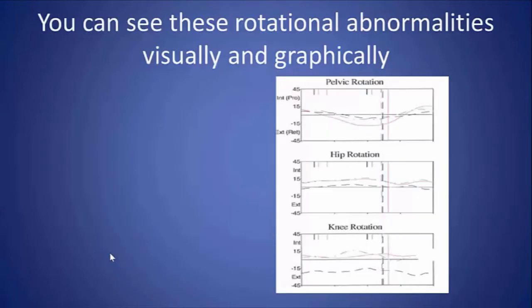This is more apparent on the graphs, which show the excessive pelvic rotation, the hip rotation indicative of internal femoral rotation throughout the gait cycle, and the knee rotation graph showing the relationship of the distal tibia to the proximal tibia and how it is internally rotated. She has a combination of internal tibial torsion as well as increased femoral anteversion, which can also be considered internal femoral torsion.